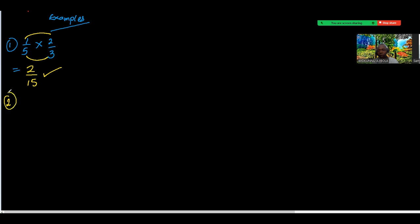Number two: 3 over 7 times 1 over 2. Again nothing is common to them, so I'll just multiply the numerators and the denominators. That gives 3 over 14.